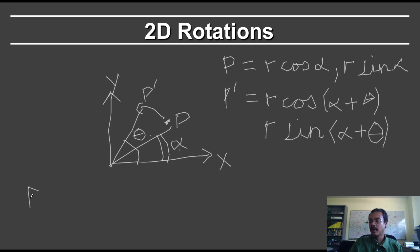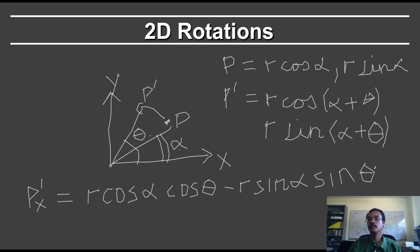So let me just do the x coordinate. So if we look at P prime and what its x value is, that will be equal to R cos alpha cos theta minus R sine alpha sine theta. The interesting thing about this formula is that we can now look at R cos alpha and R sine alpha terms here. And you notice that R cos alpha is just equal to the original value of x. While R sine alpha is just equal to the original value of y.